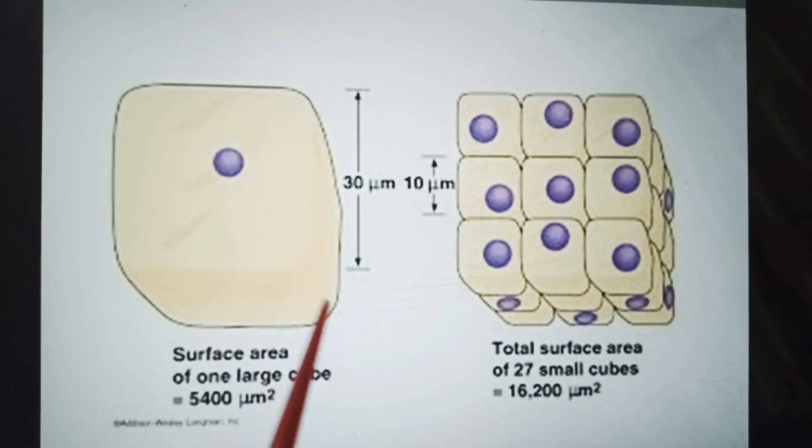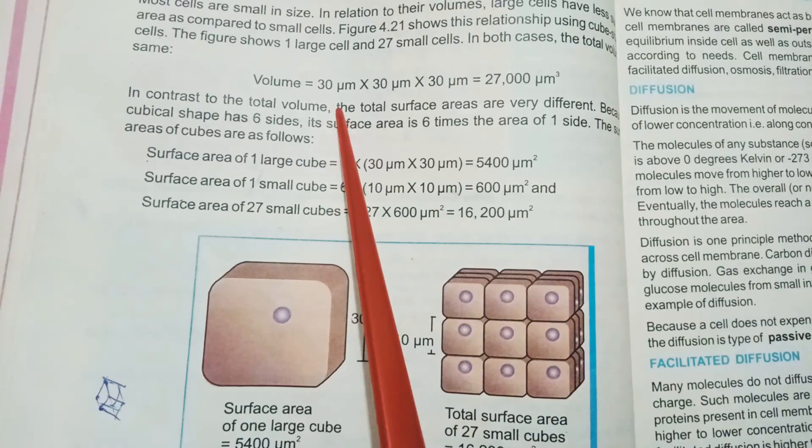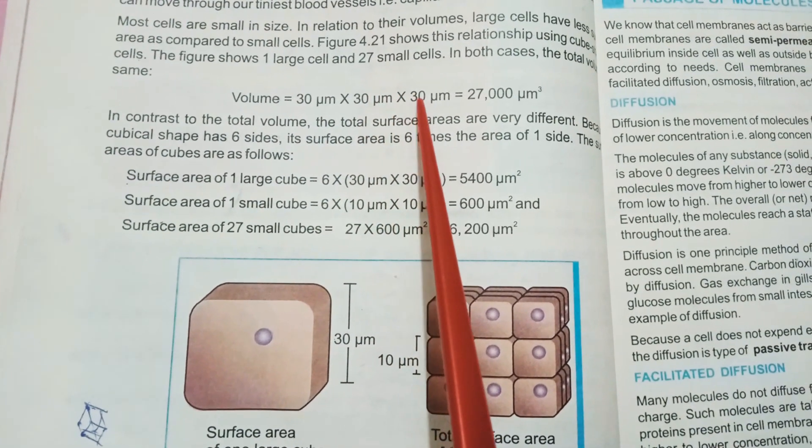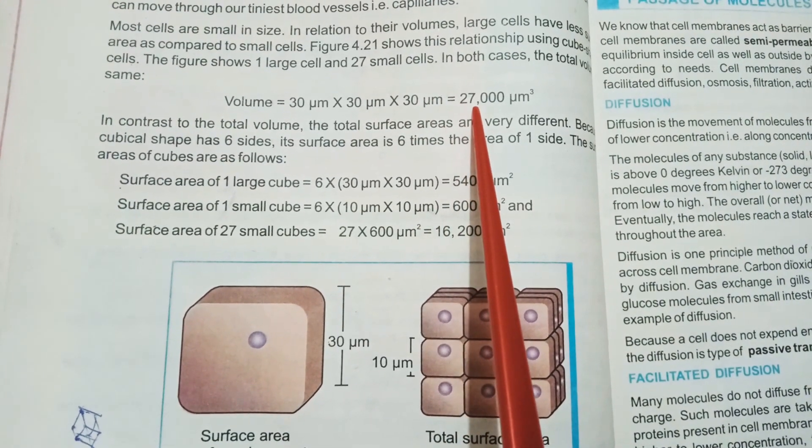Volume would be 30 micrometer into 30 micrometer into 30 micrometer, which will be equal to 27,000 cubic micrometers.